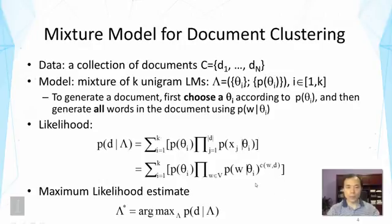So the likelihood function would be like what you are seeing here. You can take a look at the formula here. We have used a different notation here in the second line of this equation. You can see now the notation has been changed to use a unique word in the vocabulary, in the product, instead of a particular position in the document.